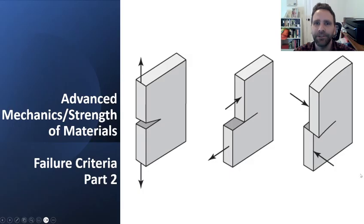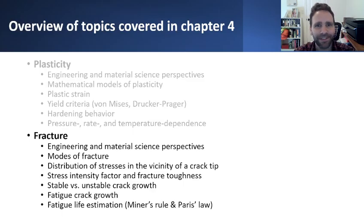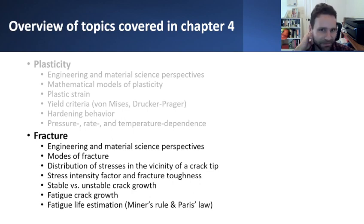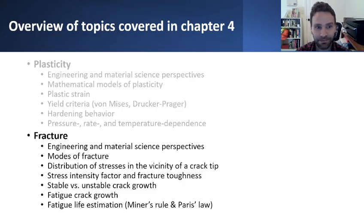Welcome back to our discussion of failure criteria, moving on to part two with a focus on fracture. Part one focused mostly on plasticity and what happens when different types of materials are subjected to excessive loading, which could lead to permanent deformation. Now we're interested in what happens when material is subjected to such high loads that it just breaks apart — we call that fracture.